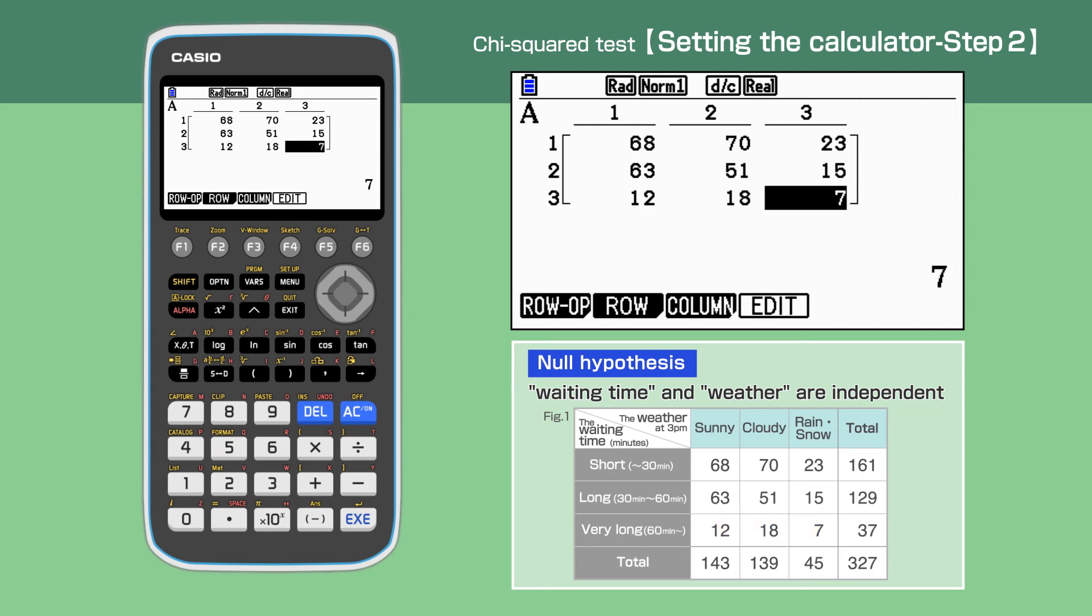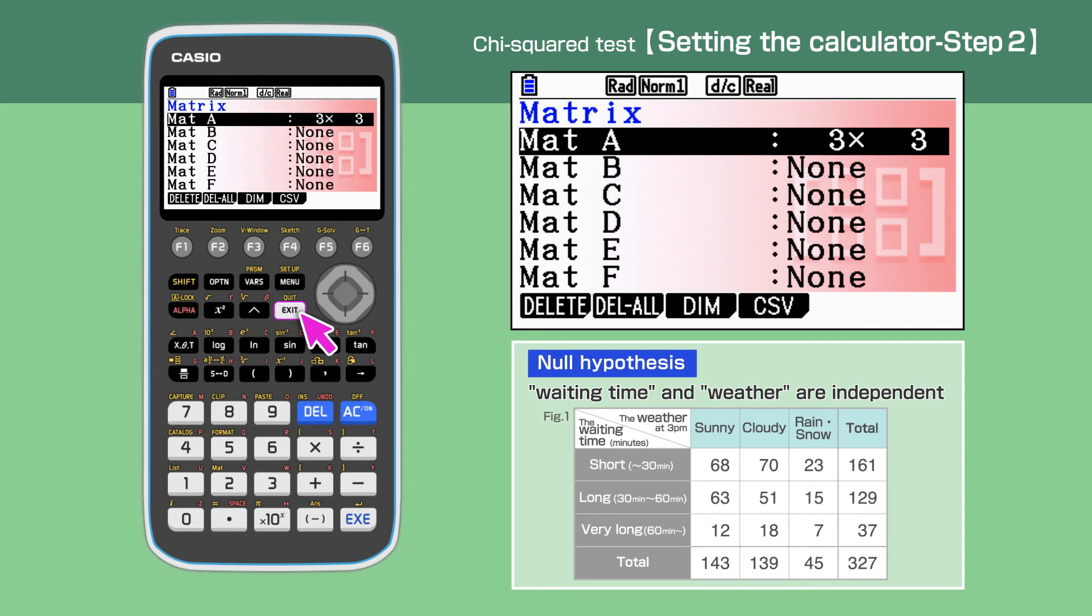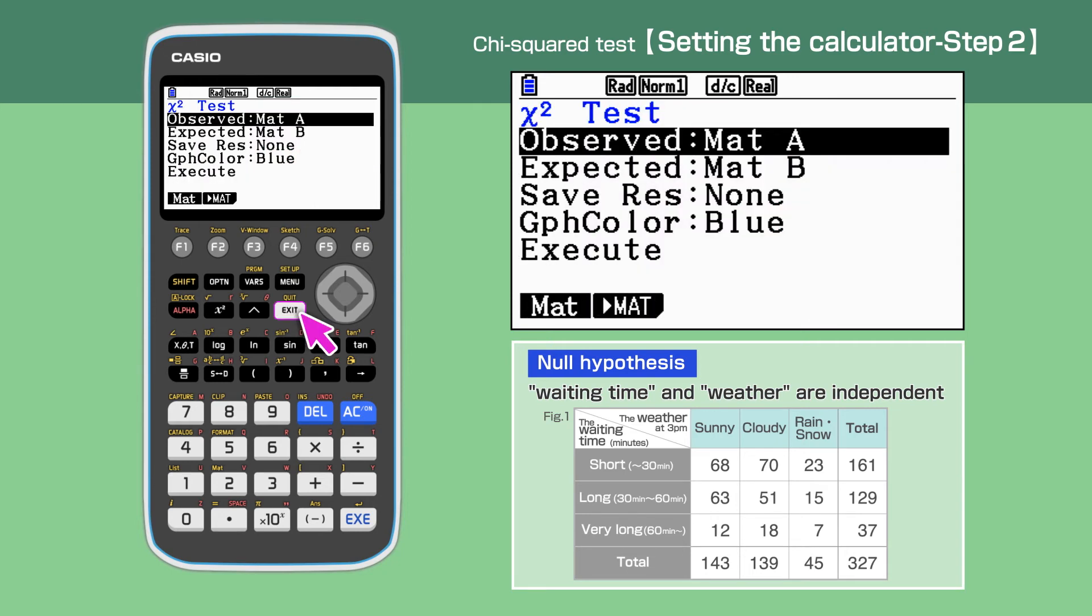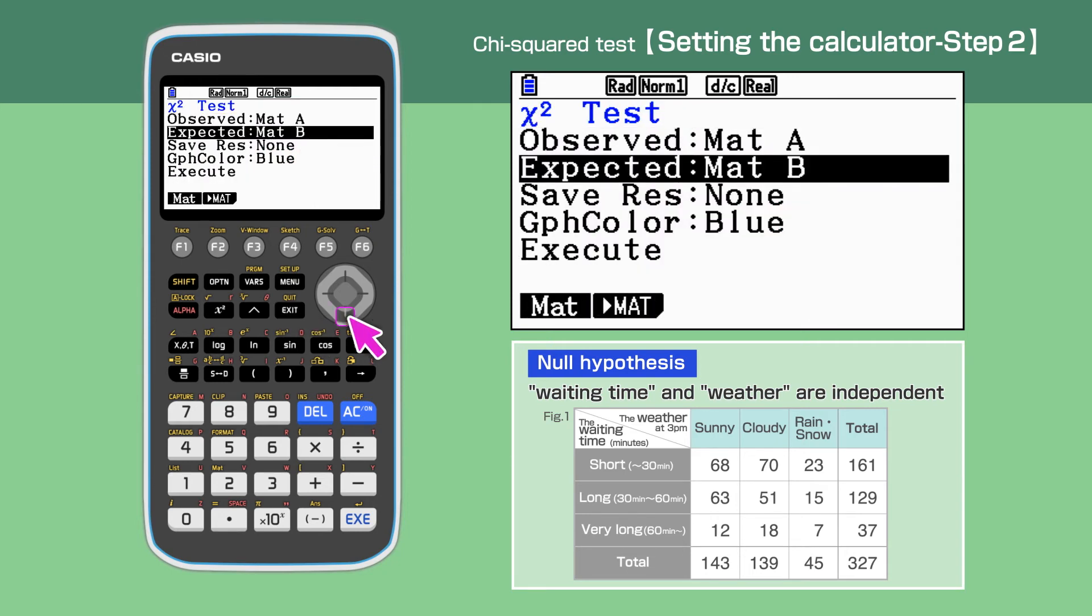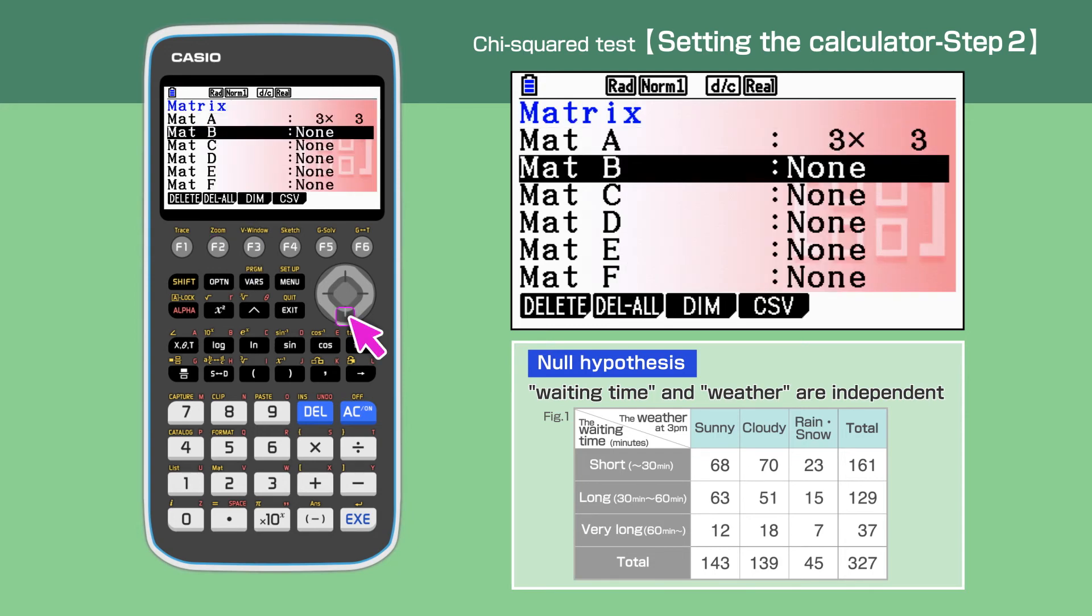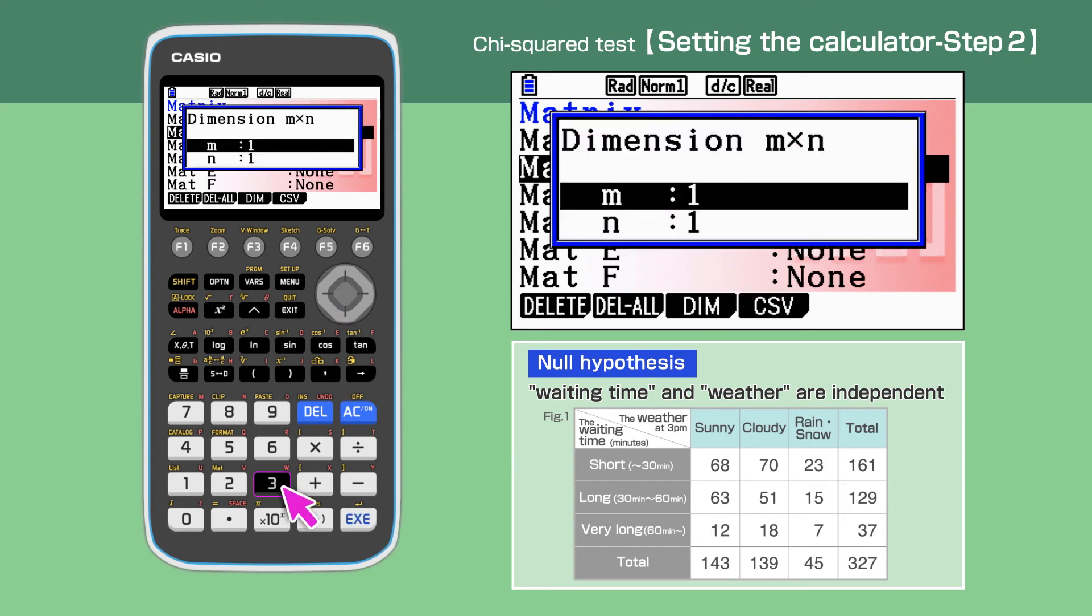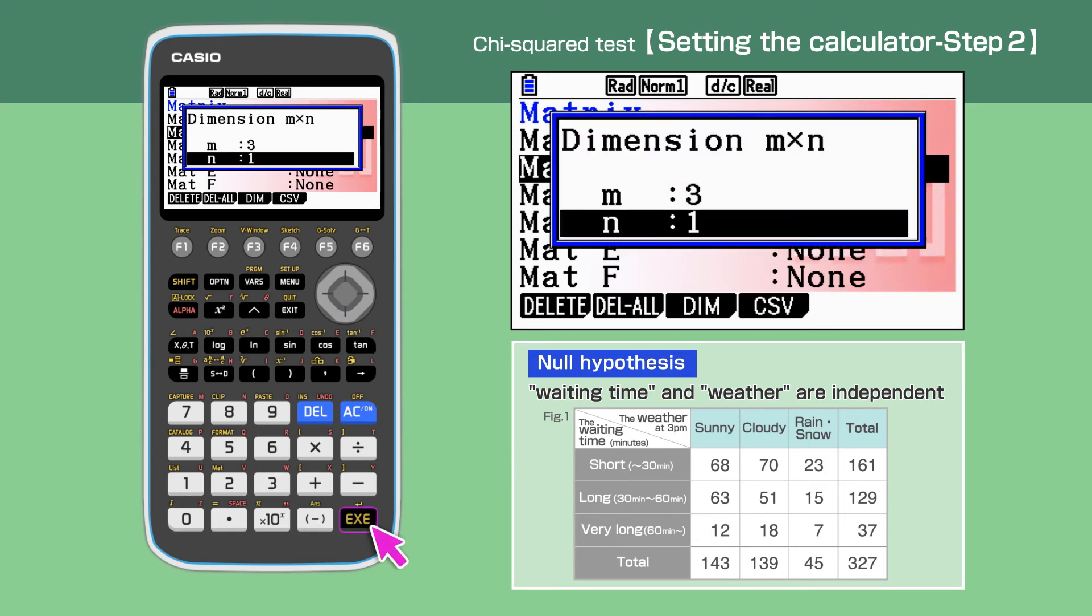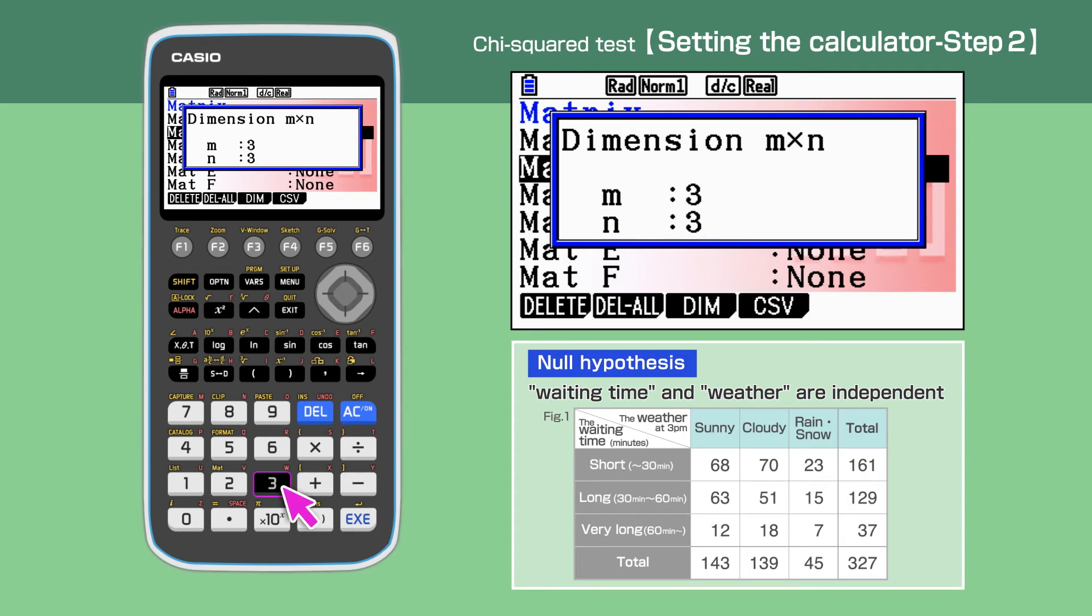Once entered all the data, press exit and exit to highlight expected. Press F2 and then highlight Mat B. Press execute and enter 3 times 3 like we have just done for Mat A. Pressing execute gives the expected values already calculated by the calculator.